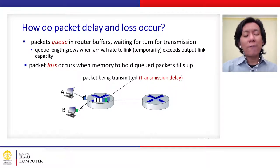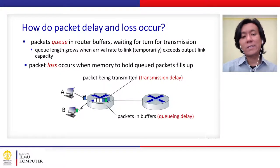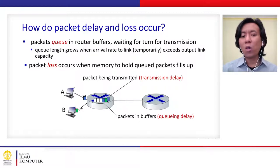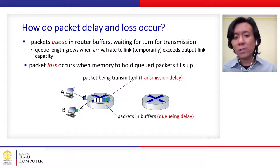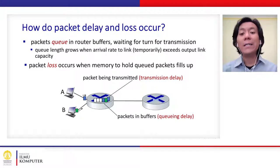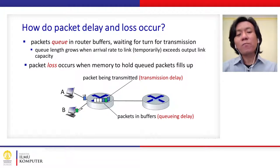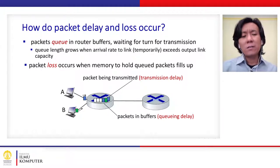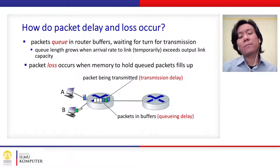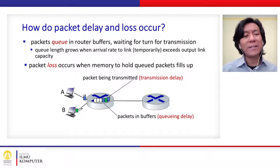From the previous video, we learned two things: a packet will have a transmission delay — the time needed for the packet to be pushed out from the router to the link — and a queuing delay, which occurs whenever the packet is queued up within the buffer in the router. But what other kinds of delays happen to a packet besides transmission delay and queuing delay?